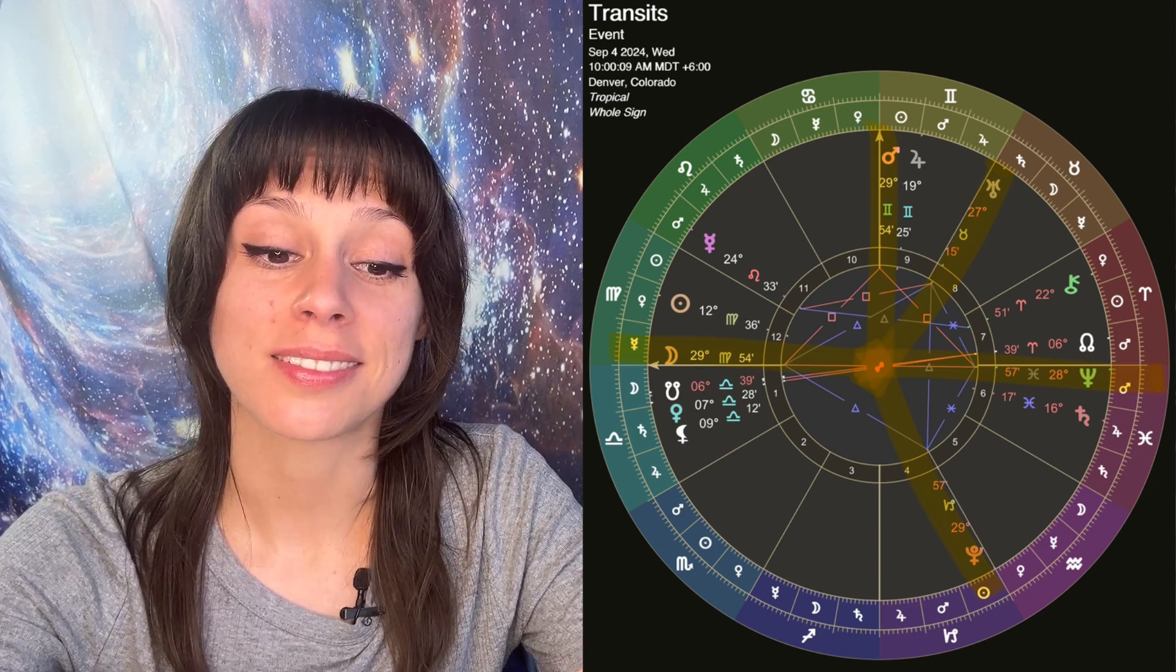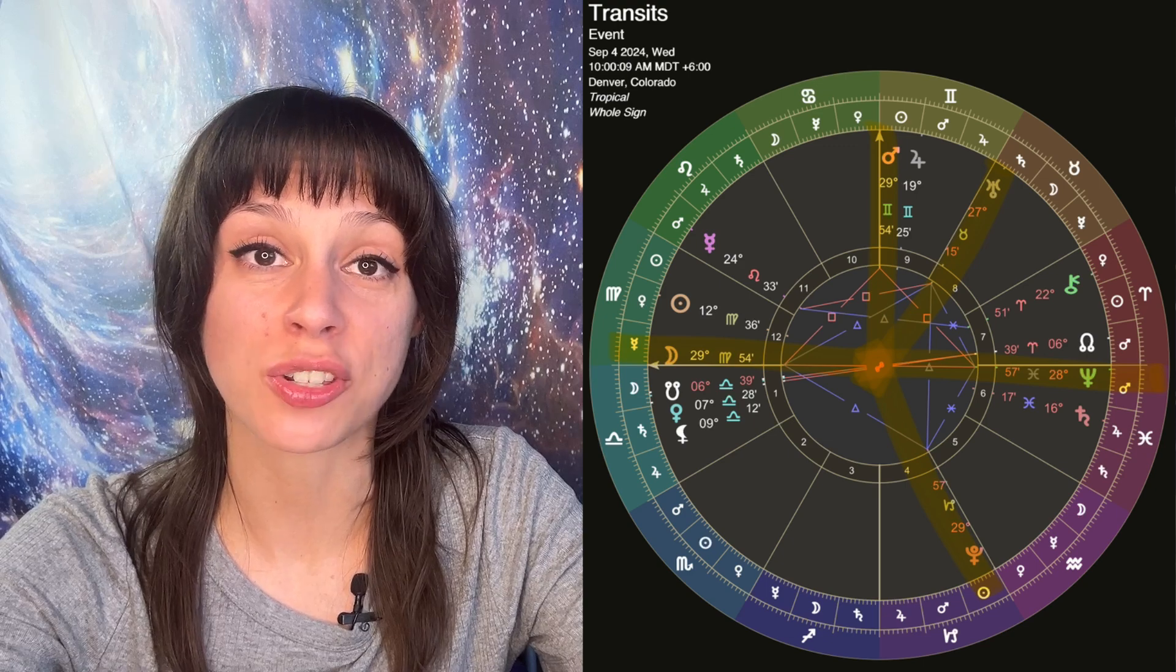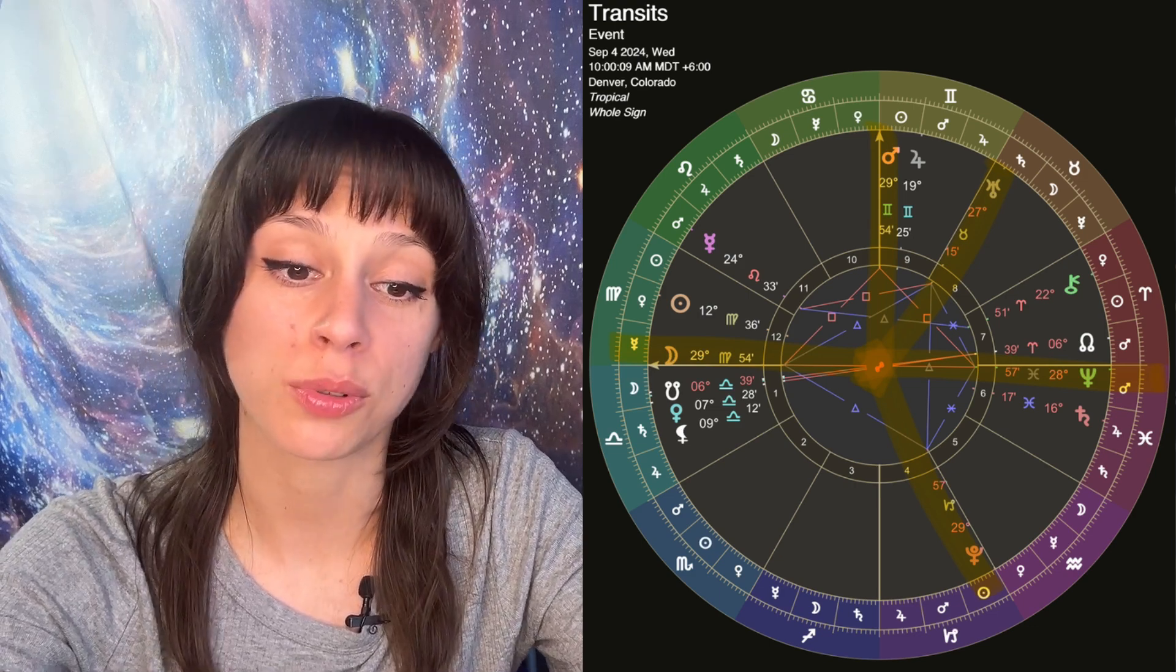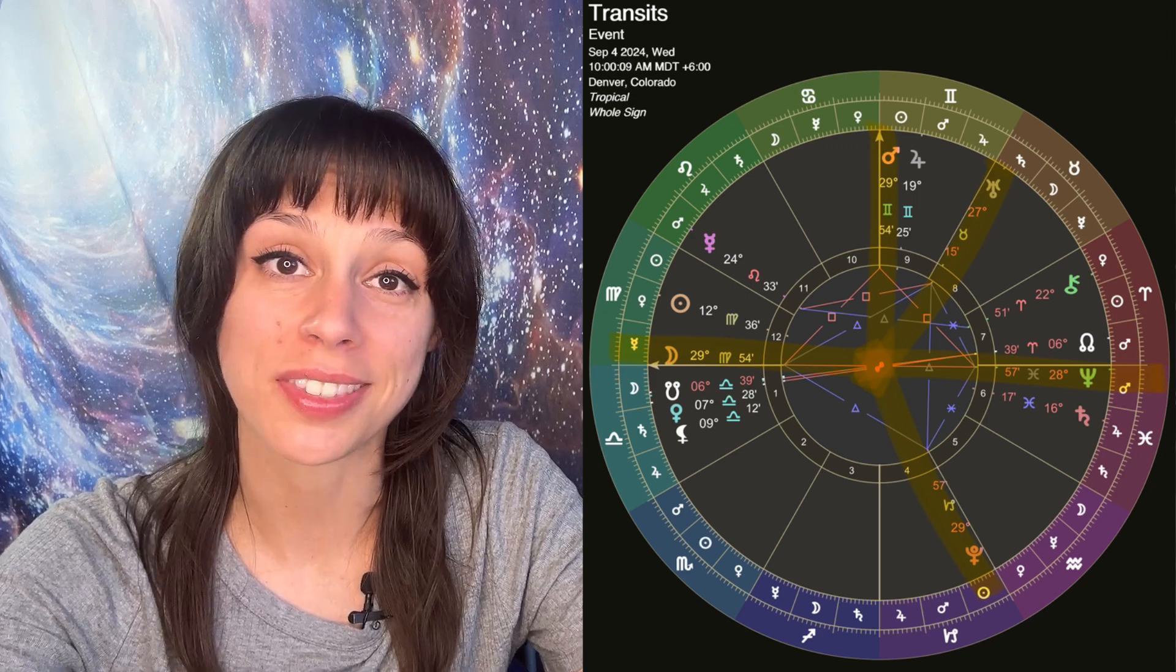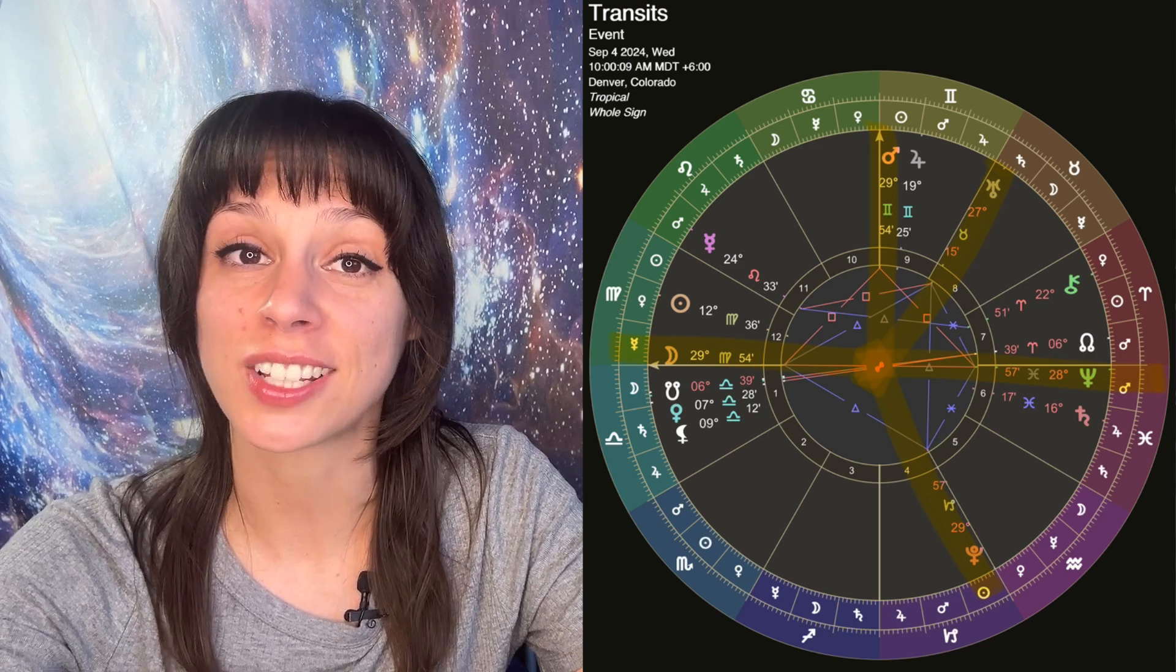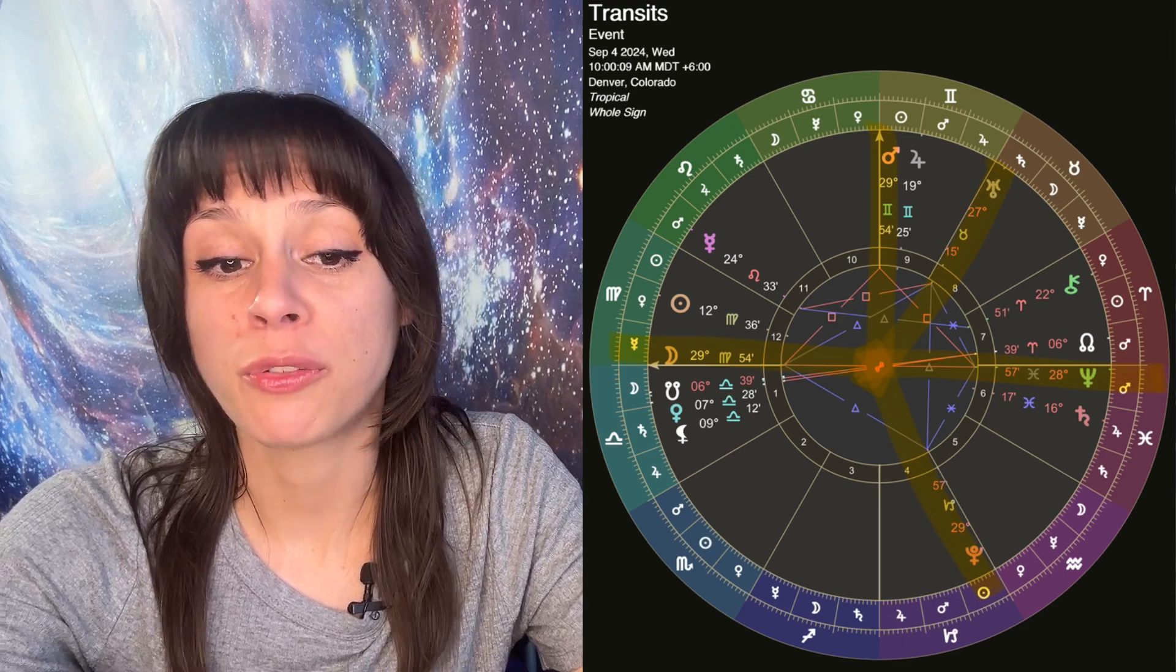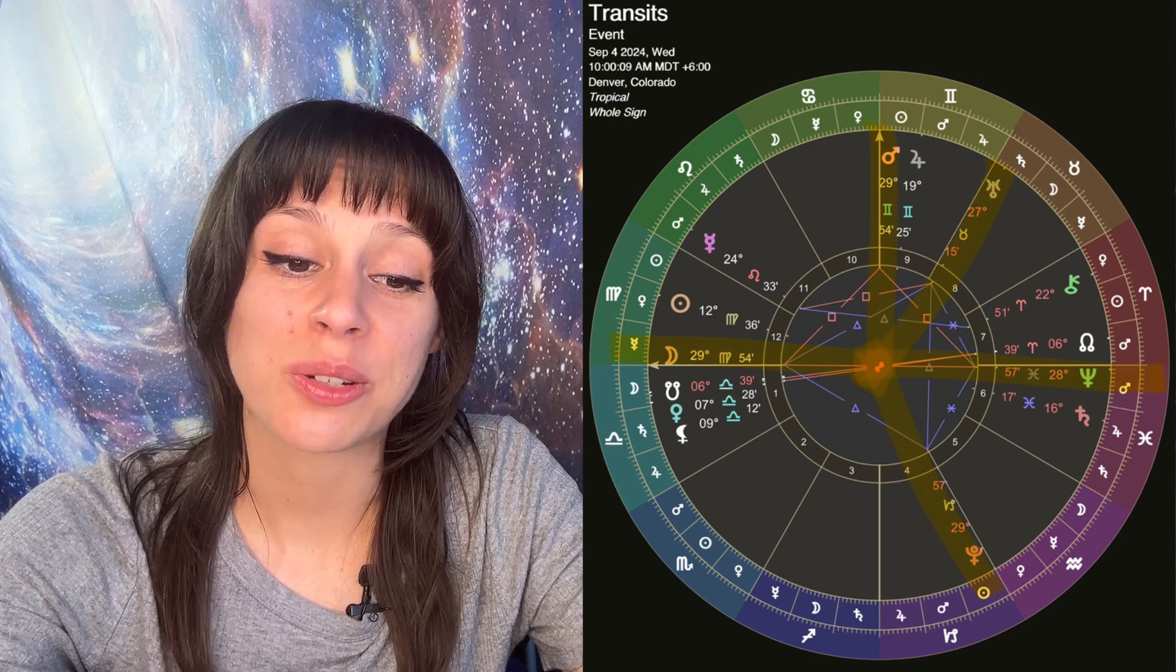Mars will be in Cancer. It's going to move all the way through Cancer. It's going to enter the first decan of Leo and then it will station retrograde and move backwards through Leo and Cancer again. And this whole process will take about five months. So about half the year, we're going to be dealing with Mars in Cancer and Mars in Leo. But it's going to move through the entire sign of Cancer before it gets to Leo.